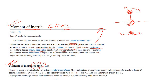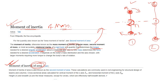Now if we move the masses farther away from the axis, we need to apply a larger torque to produce the same angular acceleration. So initially the torque was T1. In case 2, with the masses farther away, we need T2, where T2 is greater than T1.